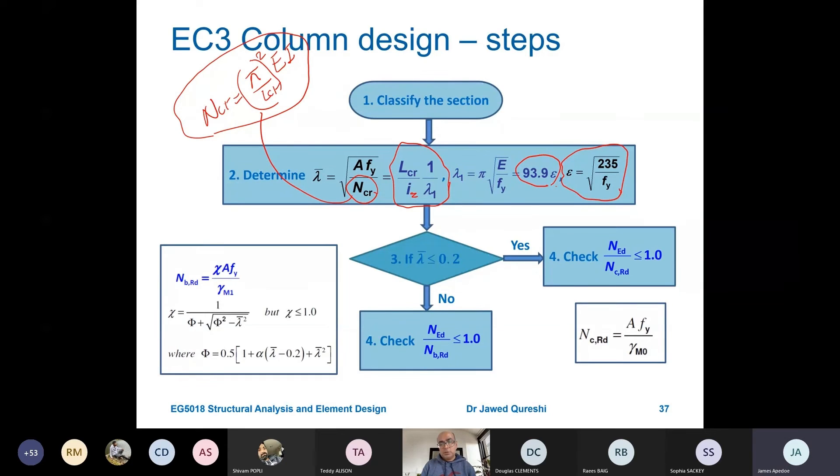The key thing to remember is: for short columns, just check cross-sectional resistance or compressive resistance, similar to tensile resistance AFy. For long columns, we need to check buckling as well. Otherwise, the design implication is we'll be highly overestimating the loading. If it needs to be checked, NED over NBRD should be less than or equal to 1. This is something we'll use for design of everything. If designing a column: NED over NBRD. If designing a beam, a restrained beam: MED over MCRD. If designing an unrestrained beam: MED over MBRD. The applied versus capacity should be less than or equal to 1.